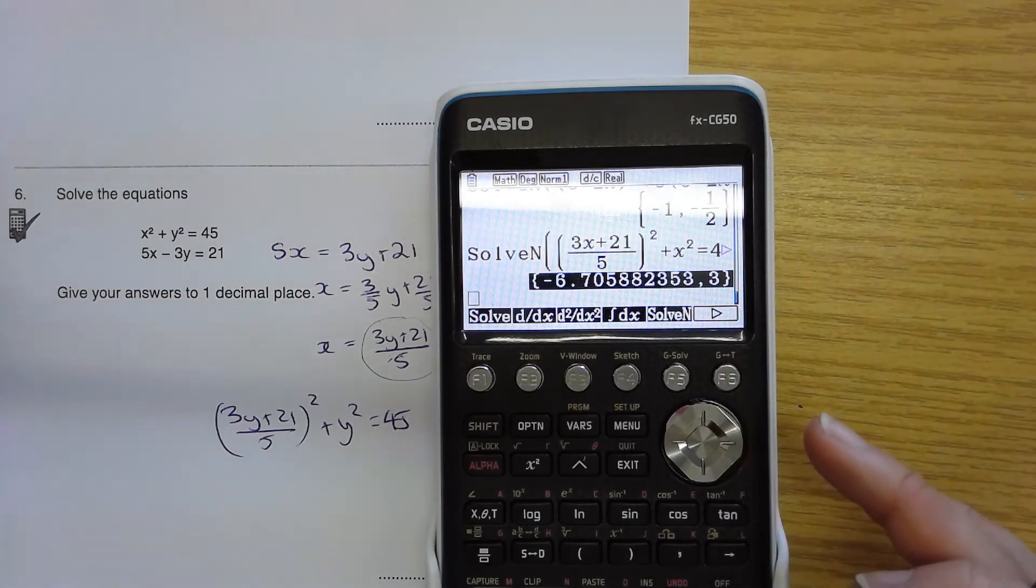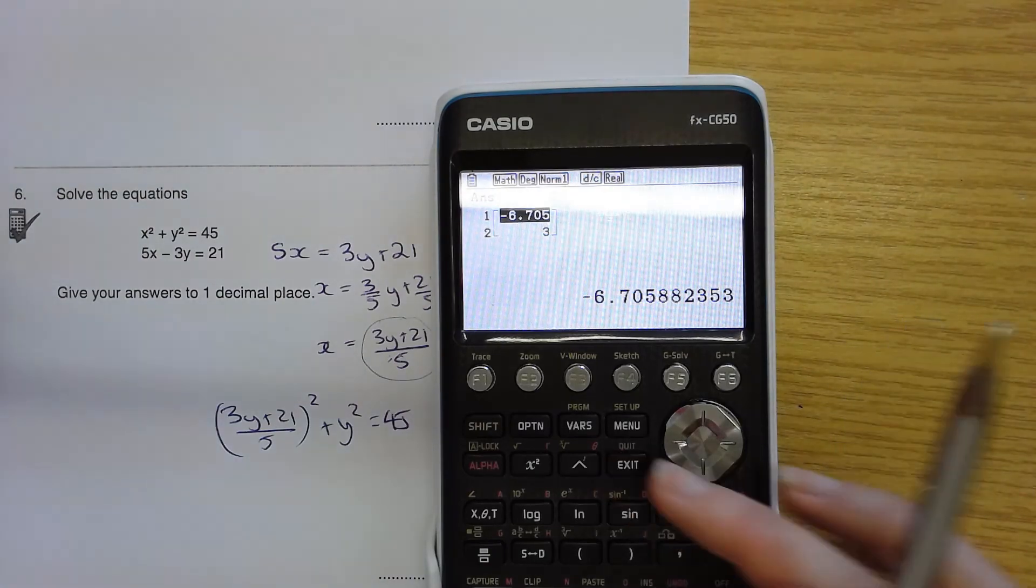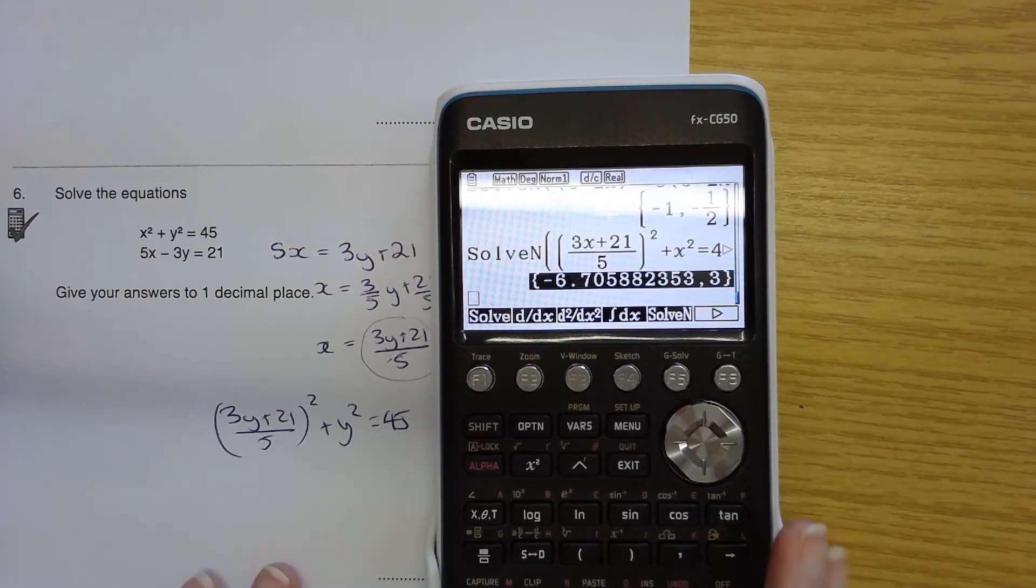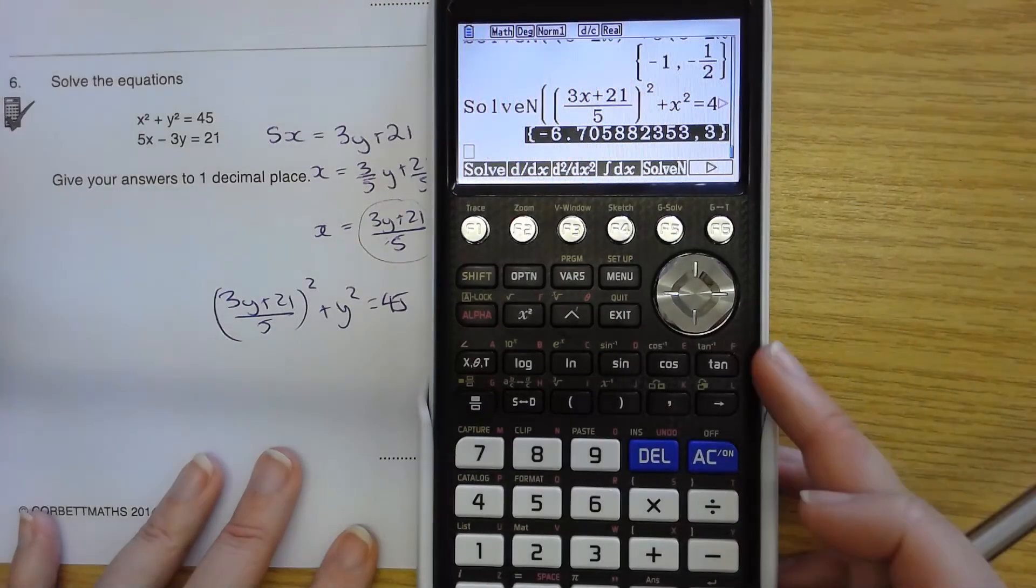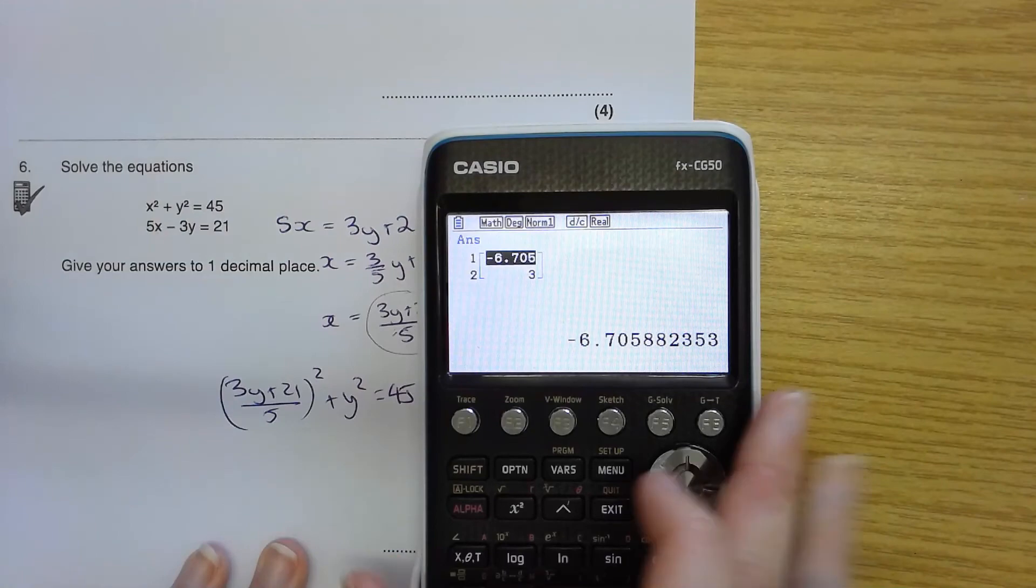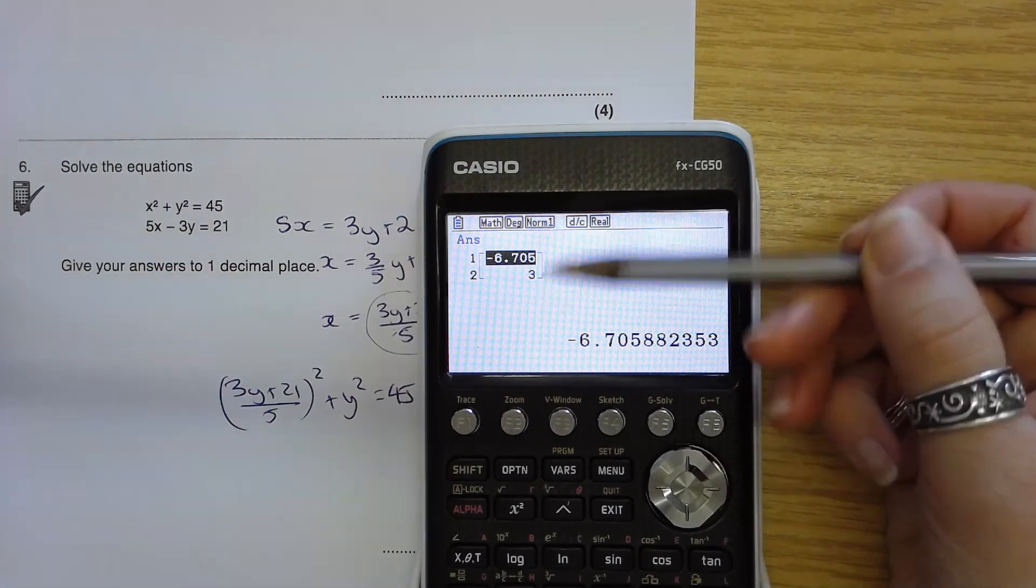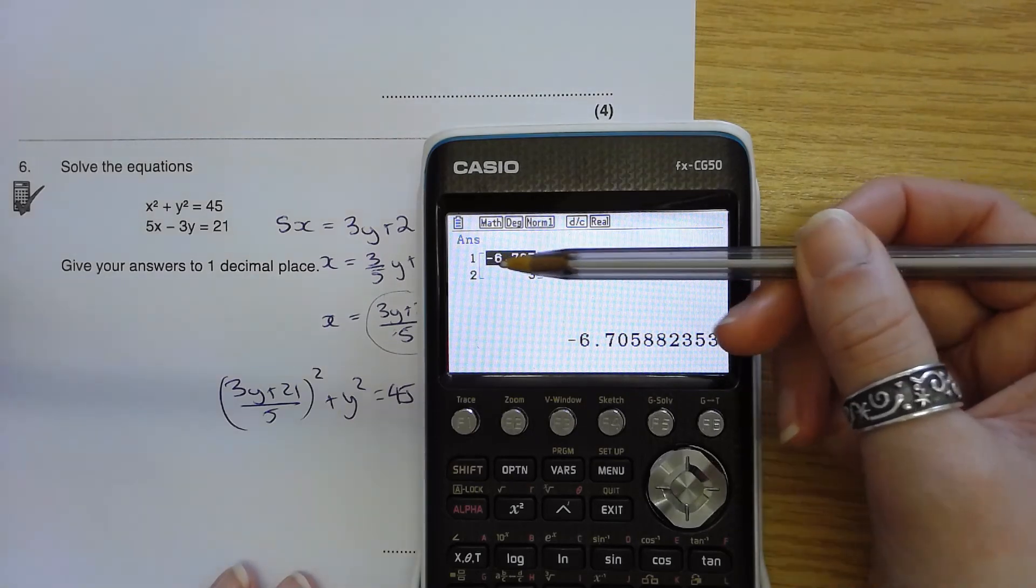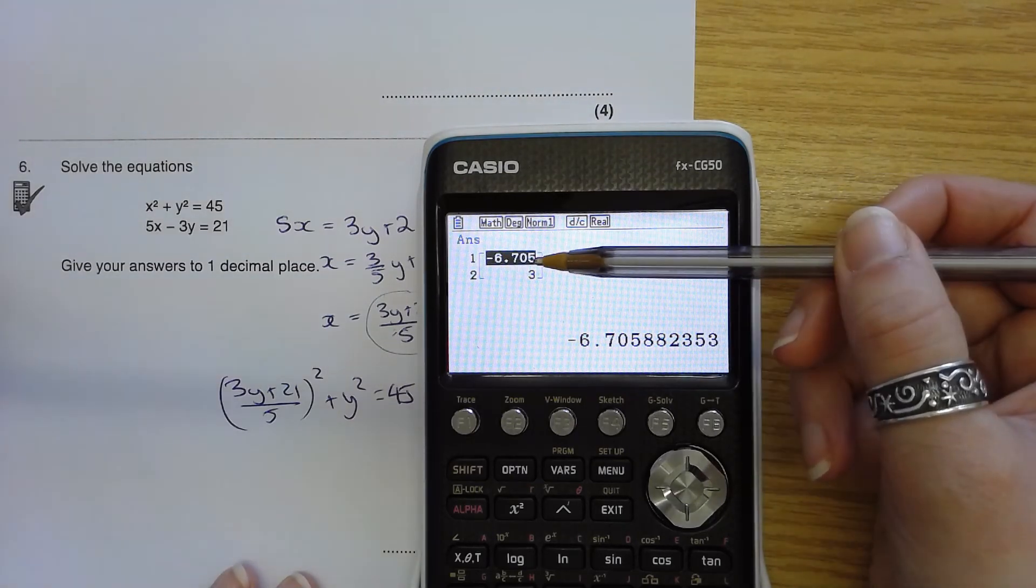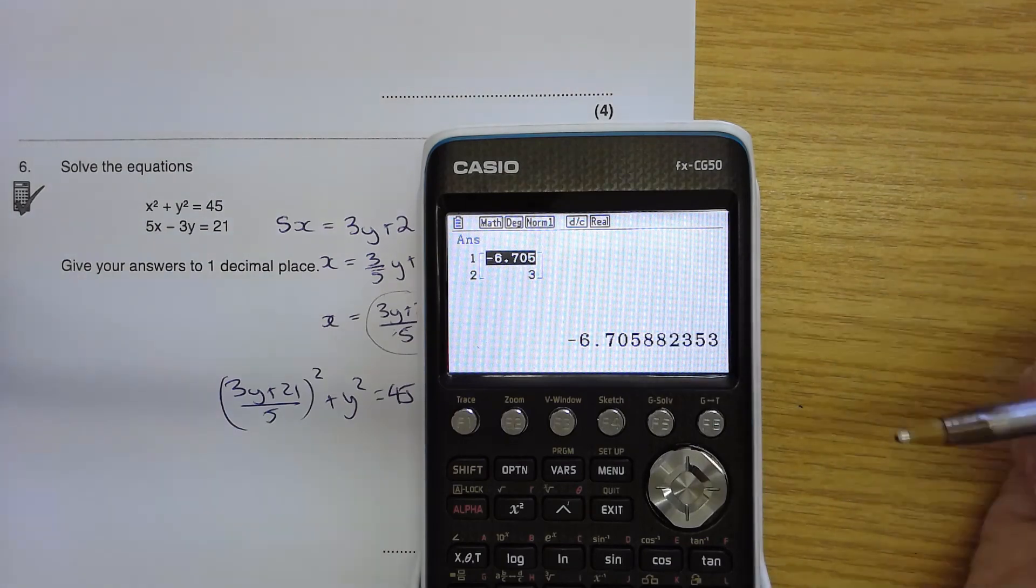Now if I want to, I can go to it and press execute. So what I did there is I scrolled up to that. And if I press execute, instead of seeing them in a list one after the other, it gives it to me in a table form. We've seen this before with the simultaneous equation solver. In this table here, it's got a shortened version. Be careful because it hasn't been rounded. It's just been truncated.